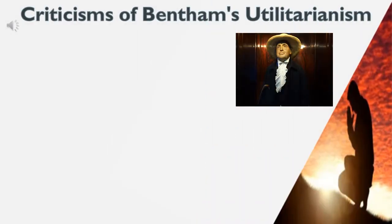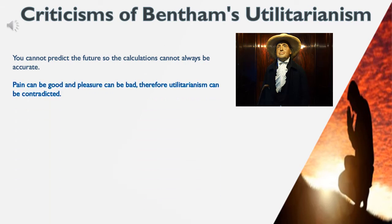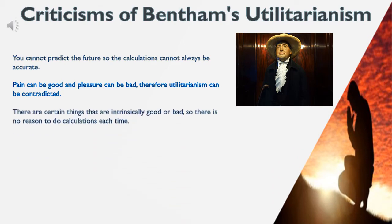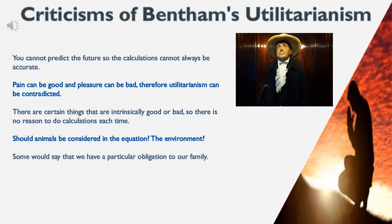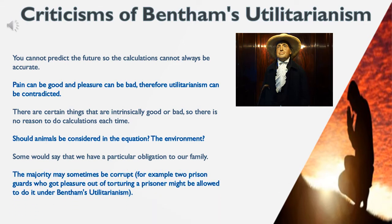Criticisms of Bentham's utilitarianism. You cannot predict the future, so the calculations cannot always be accurate. Pain can be good and pleasure can be bad, therefore utilitarianism can be contradicted. There are certain things that are intrinsically good or bad, so there is no reason to do calculations each time. Should animals be considered in the equation? The environment? Some would say that we have a particular obligation to our family. The majority may sometimes be corrupt — for example, two prison guards who got pleasure out of torturing a prisoner might be allowed to do it under Bentham's utilitarianism.